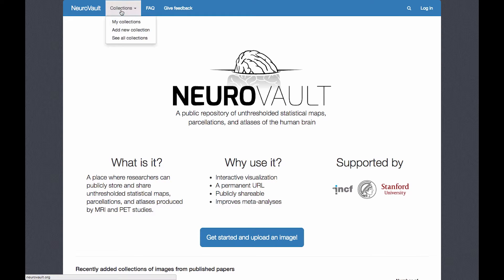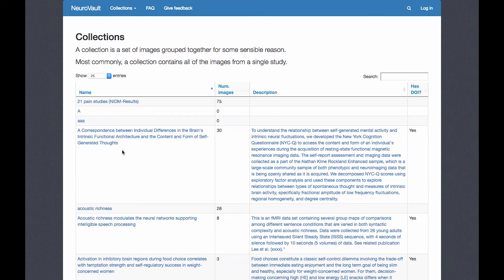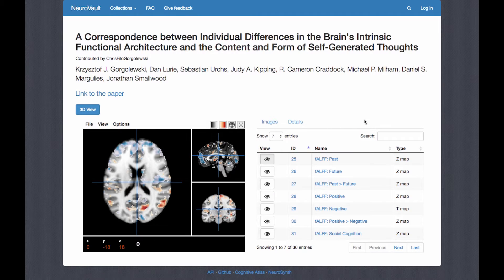To see what they have, click on Collections, See All Collections, and then click on whatever study interests you. This will give you a list of different group-level maps or different contrasts. In this case, let's say past greater than future.